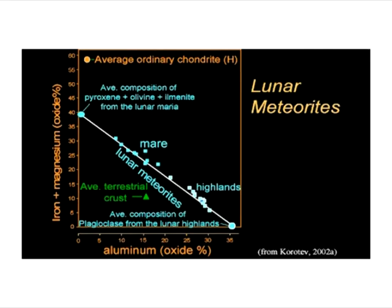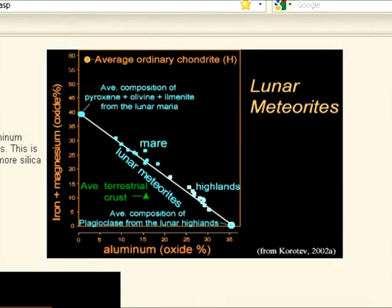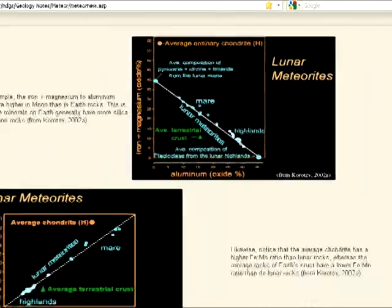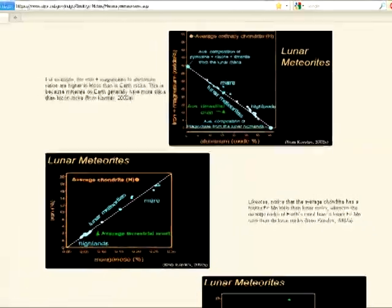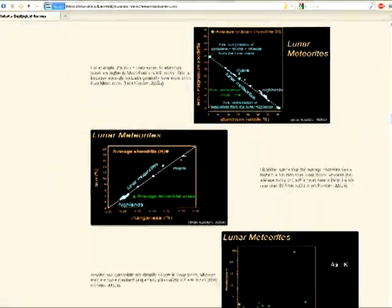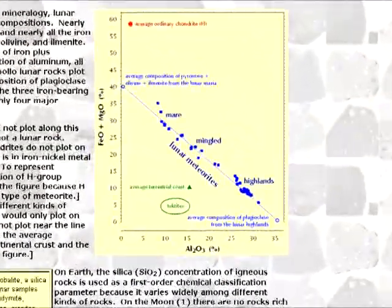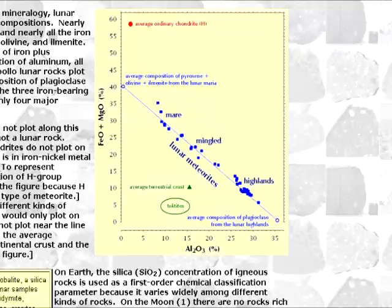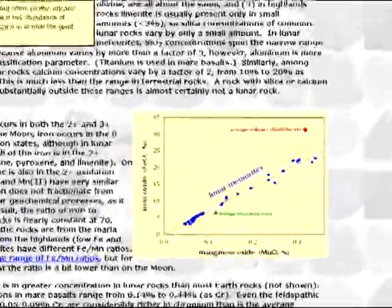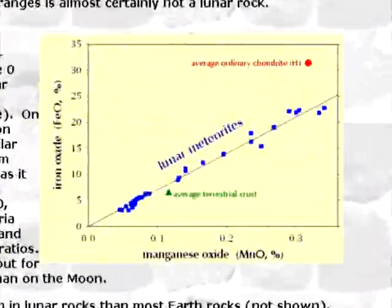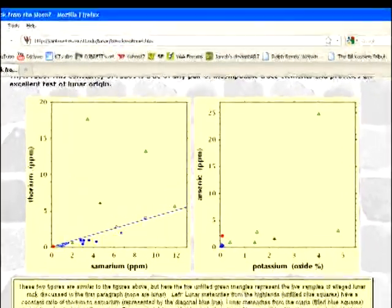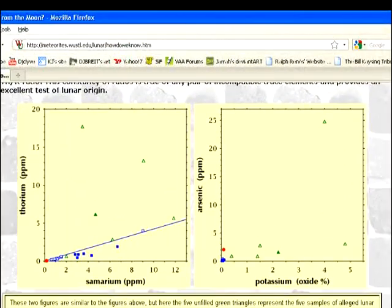This diagram Webb obviously took from an online article by Mark Gonzalez of the North Dakota Geological Survey. This article is pretty much a carbon copy of Randy Korotev's webpage, 'How Do We Know It's a Rock from the Moon?' In fact, all the ratio charts that Webb shows were copied from charts previously posted by Korotev.